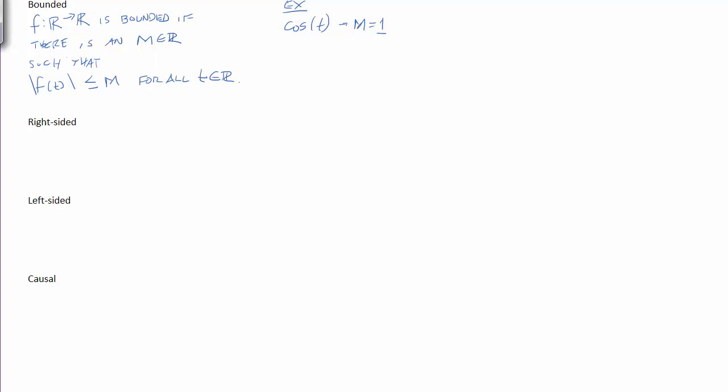And another example of a bounded signal is, let's take 1 minus e to the minus t, and let's multiply that by a unit step. So, we all know what cosine looks like. What does this function look like?